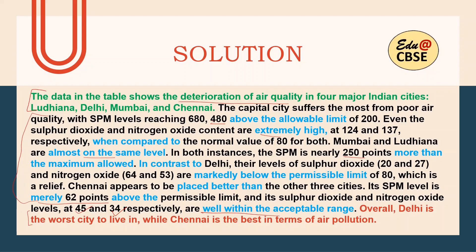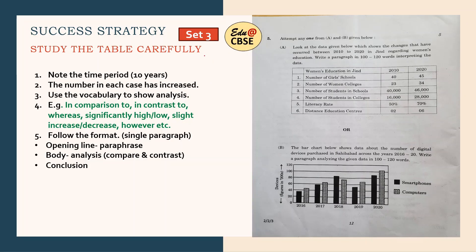Now I move on to the next question, which was in set three. The question reads: look at the data given below, which shows changes that occurred between 2010 to 2020 regarding women's education in India. Write the paragraph in about 100 to 120 words interpreting the data. The numbers have increased every time between 2010 and 2020. Note the time period first — the gap is 10 years. The number in each case has increased. Use similar vocabulary and format: opening line, body, and conclusion.